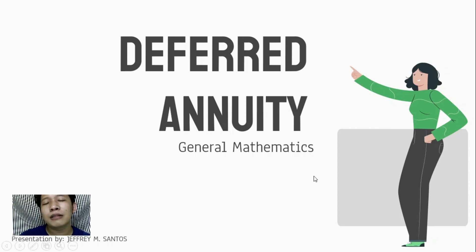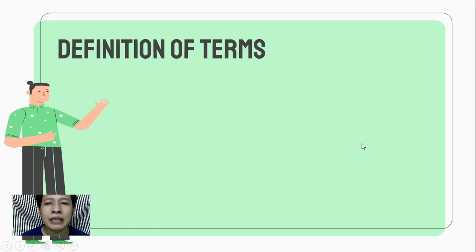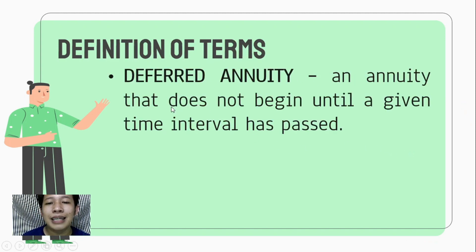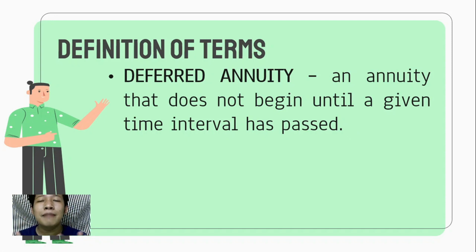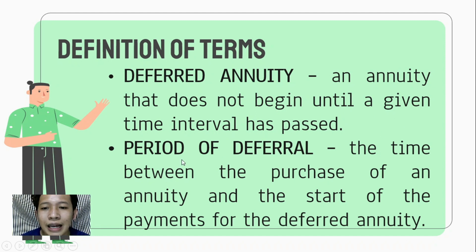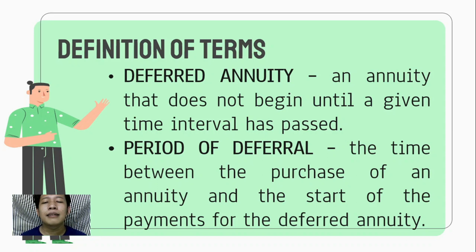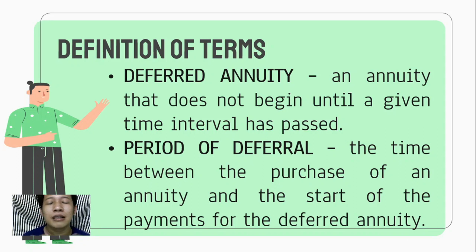These are the most important terms we need to understand as we encounter deferred annuity. A deferred annuity is an annuity that does not begin until a given time interval has passed — meaning there is a period of postponement before you start paying or depositing. The period of deferral is the time between the purchase of the annuity — for example, when you buy an appliance on installment — and the start of the payments for the deferred annuity, which is when you make your first payment.